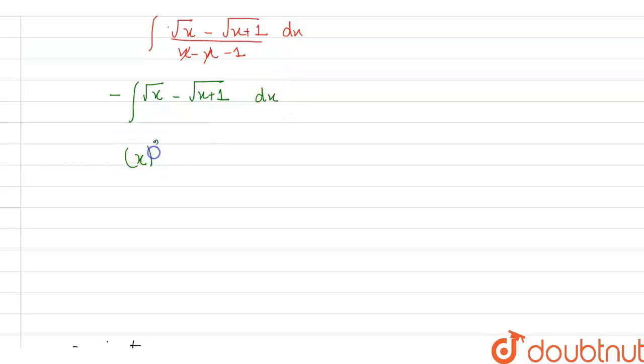So this becomes x raised to the power 3 by 2 and we can take minus 3 by 2 out, minus 2 by 3 outside, minus x raised to the power x plus 1.